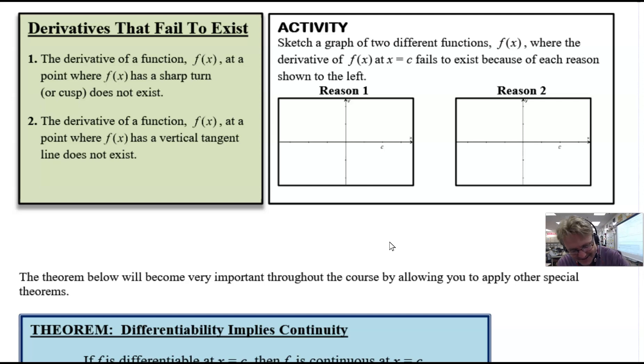All right, welcome back. For the first reason, if you want to draw any kind of a sharp turn, all I need to see is something that looks like you've got nice smooth motion to it, and then all of a sudden when you get to the c, you can just draw something that's a little bit of an abrupt change. It doesn't have to be a super sharp turn like a V shape, which we've seen many times—it can be something as subtle as that, and the derivative won't exist.